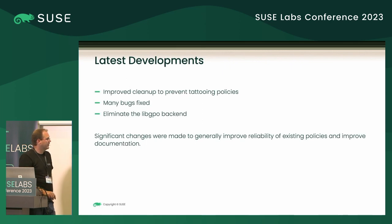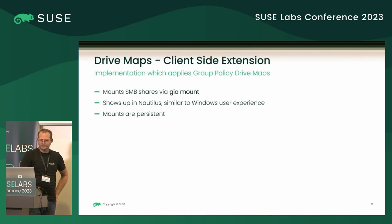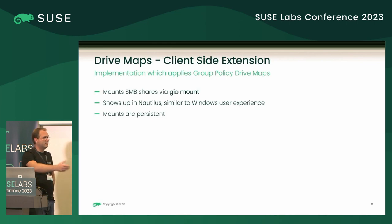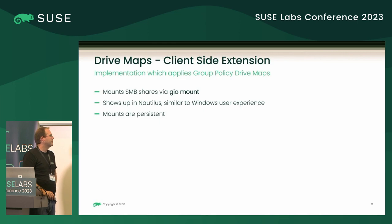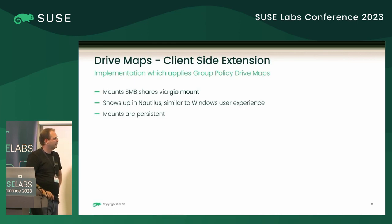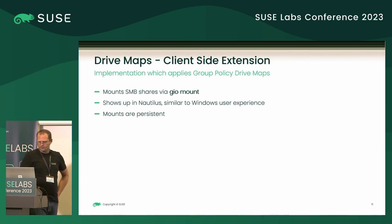I've improved the reliability and the documentation — those are the most important improvements. Drive Maps: the idea is to provide a similar experience to what Windows users would expect. Drive Maps uses the same policy that Microsoft uses, and we're using GIO mount to mount the SMB shares. It doesn't mount to a drive letter, so it might be a little different from what a Windows user expects. It will show up in Nautilus and Seahorse similarly to how a Windows user would expect, and the mounts are persistent so that if you reboot it will remount the share.